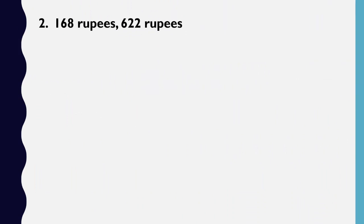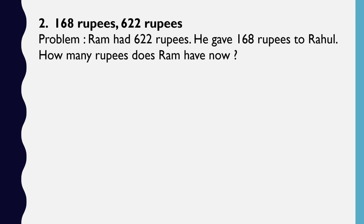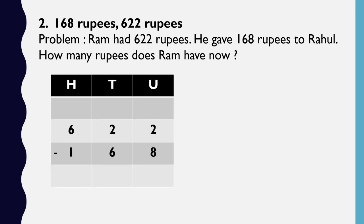The next sum is 168 rupees and 622 rupees, so we have to make a word problem. Ram had 622 rupees; he gave 168 rupees to Rahul. How many rupees does Ram have now? We have to find out how many rupees Ram is left with, so we will subtract 168 from 622.